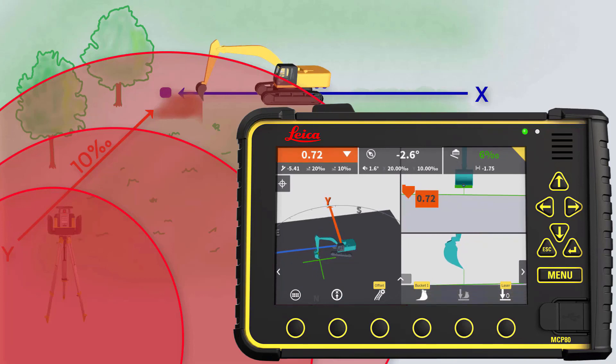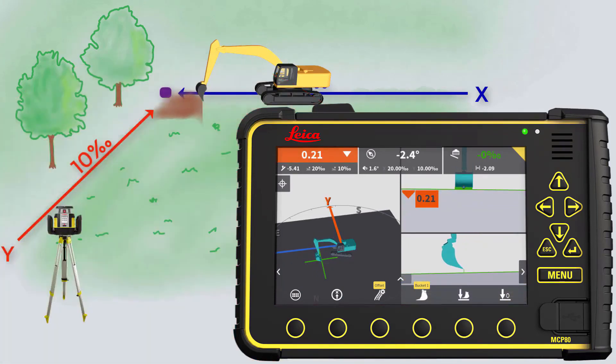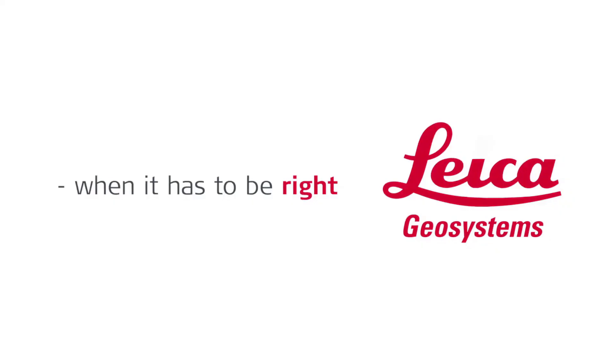That's it. You have learned how to use the 2D functionality in MC1 with the laser as height reference.